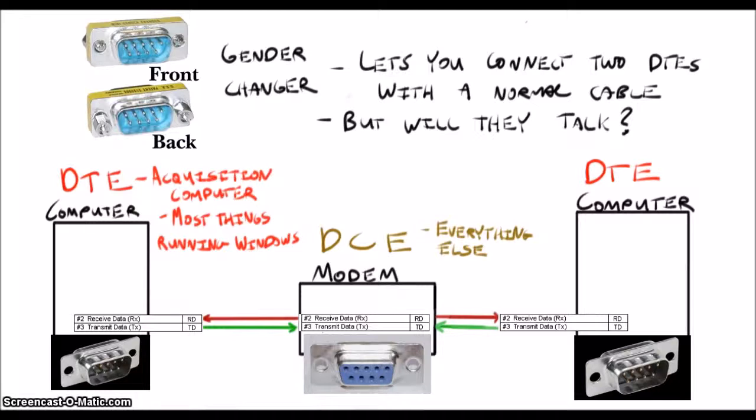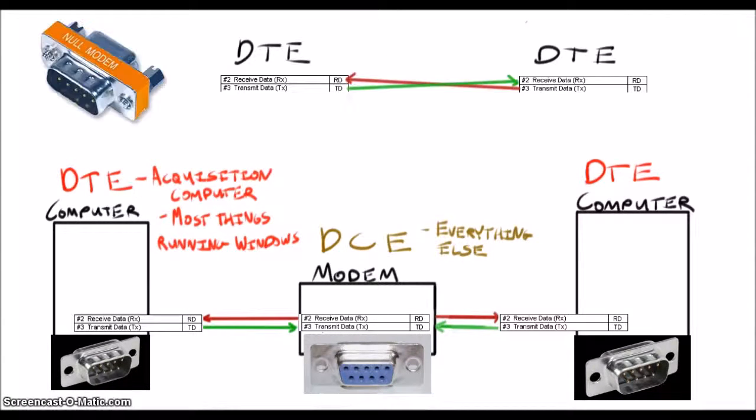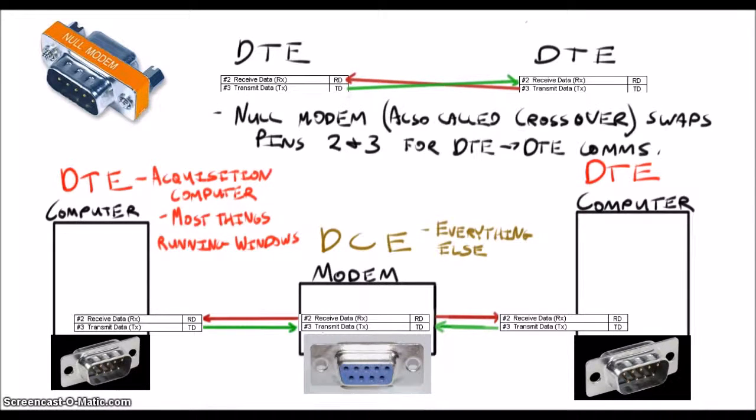What you really need to make that work is to swap the receive and transmit lines so that they match up on both ends. That's where null modems come in. Null modems are just another adapter that switch those wires. Pretty simple.